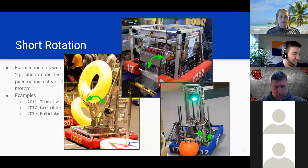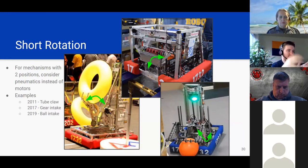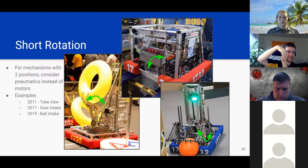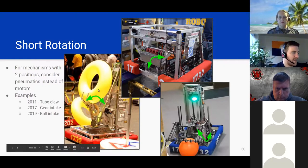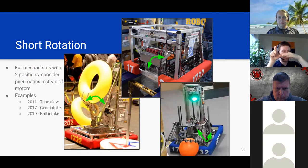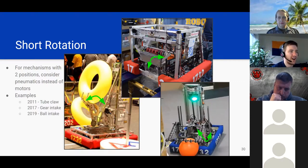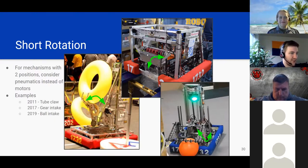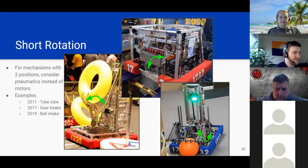Short rotations — going even deeper into the archives. In 2011, a giant claw to grab inner tubes used a short rotation to open and close. In 2017, a mechanism dropped down to pick up big plastic yellow gears. In 2019, an intake swung out to pick up balls. For these short rotations, it's really easy to just put something on an axle to pivot and run a pneumatic cylinder to slam it open and closed. These are also examples where you'd probably want flow control — you don't want your intake slamming hard into the ground and destroying itself.